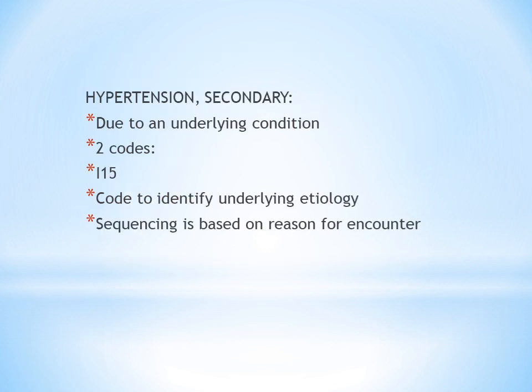The next topic is Secondary Hypertension. Secondary hypertension is due to an underlying condition. Because there is an underlying condition that causes the hypertension, we use two codes: first, the underlying etiology, and then the secondary hypertension code.